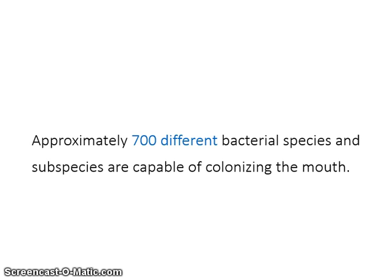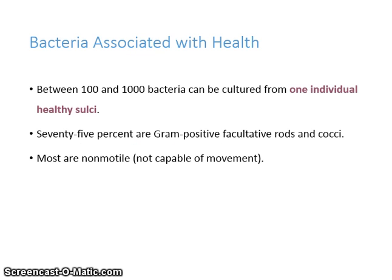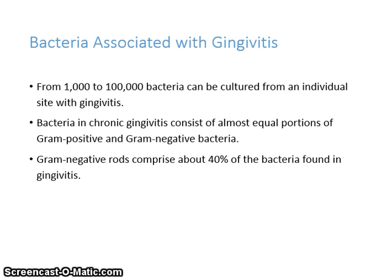Approximately 700 different bacterial species and subspecies are capable of colonizing the mouth. Between 100 and 1,000 bacteria can be cultured from one individual healthy sulcus. 75% are gram-positive, facultative rods, and cocci. Most are non-motile, meaning they are not capable of movement. In gingivitis, from 1,000 to 100,000 bacteria can be cultured from an individual site. Bacteria in chronic gingivitis consist of almost equal portions of gram-positive and gram-negative bacteria. Gram-negative rods comprise about 40% of the bacteria found in gingivitis.